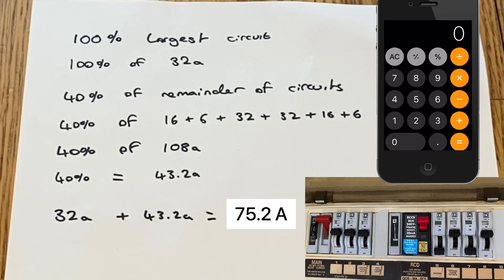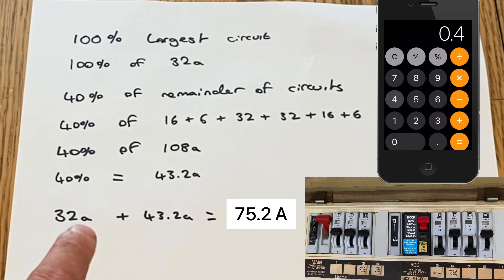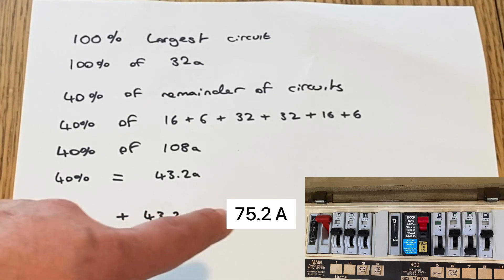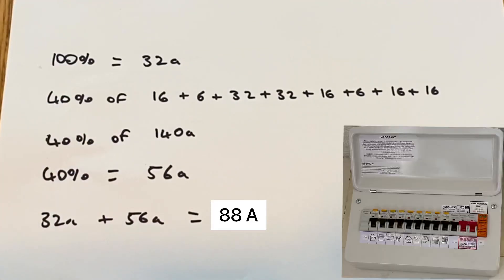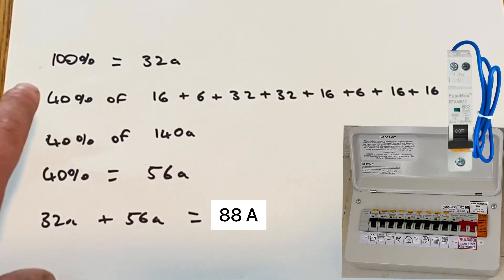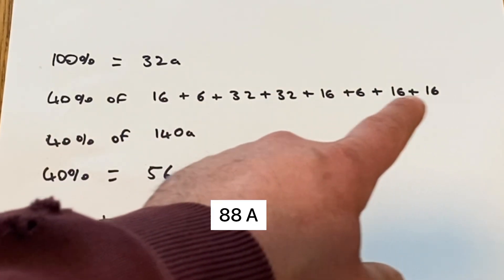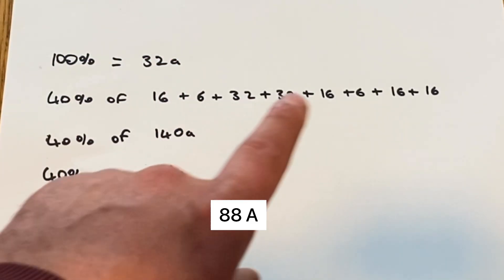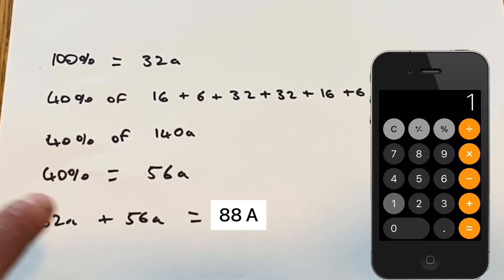For the new layout with the extra circuits, again we take 100% of the largest circuit, 40% of the remainder. Again we add all of these together, we don't add the largest circuit we've already took. 40% of 140 amps, which is what these equal to, is actually 56 amps.